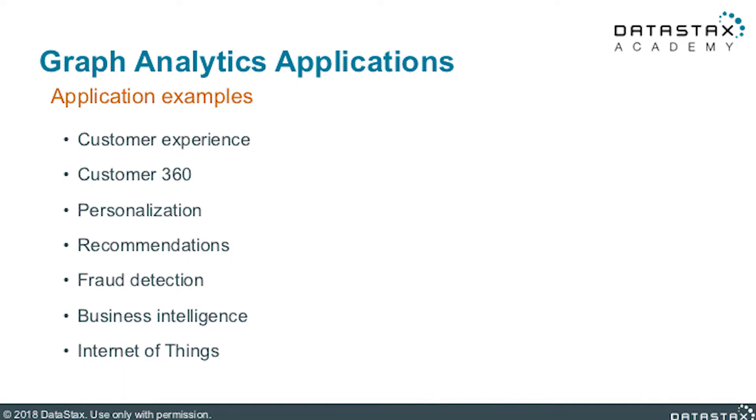Many real-life problems and data sets are naturally represented as networks, webs, or graphs. They also primarily focus on connections, links, relationships, and dependencies. Complex relationships, such as those captured in the domains of Customer 360, recommendations, fraud detection, and so forth, are best modeled and traversed using graphs. Of course, this is not a complete list of graph analytics applications, but it is quite representative for DSC Graph.